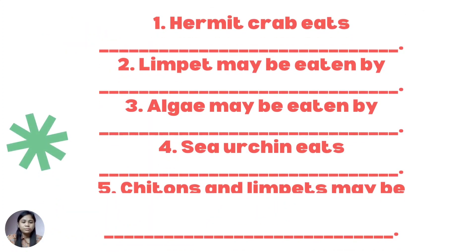Number one, hermit crab eats ___. Number two, limpet may be eaten by ___. Number three, algae may be eaten by ___. Number four, sea urchin eats ___. And number five, chitons and limpets may be eaten by ___.